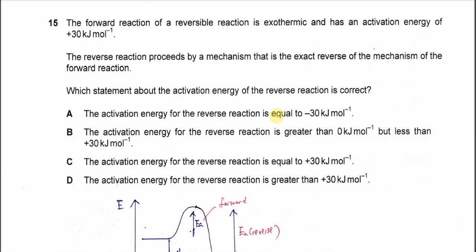Question 15. The forward reaction of a reversible reaction is exothermic and it has the activation energy of 30 kilojoules per mole. Reverse reaction proceeds by a mechanism that is exact reverse of the mechanism of the forward reaction. Which statement about the activation energy of the reversed reaction is correct?